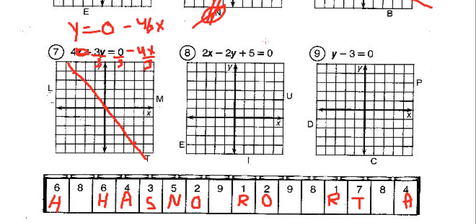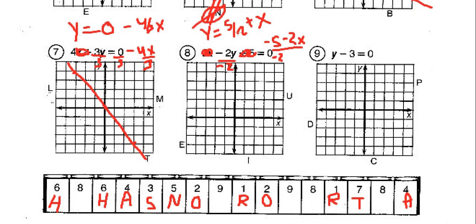Number 8. We've got to subtract 5 from both sides and subtract 2x from both sides, then divide everything by negative 2. That gives us y = positive 5/2 + x. The y-intercept is 5/2 — that's 2 and a half — and we've got a positive 1 slope, so everything's going to be kind of at a half there. That's going to be right through the E. So question 8 is going to be E.